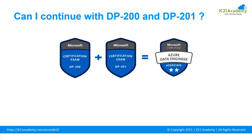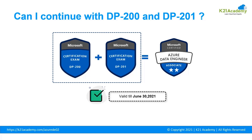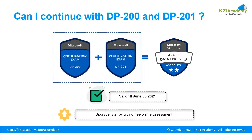Can you continue with DP200 and DP201? Yes, those exams are still valid and available until June 30th, 2021. If you are already preparing or have given one of these exams, I would suggest you continue and finish them, then take your Azure Data Engineer certificate. Later, you can upgrade to DP203 by giving a free online assessment. Note that all Microsoft certification exams are valid for one year, and you must complete a free online assessment before that year is up to keep them valid — this applies to DP203 as well.